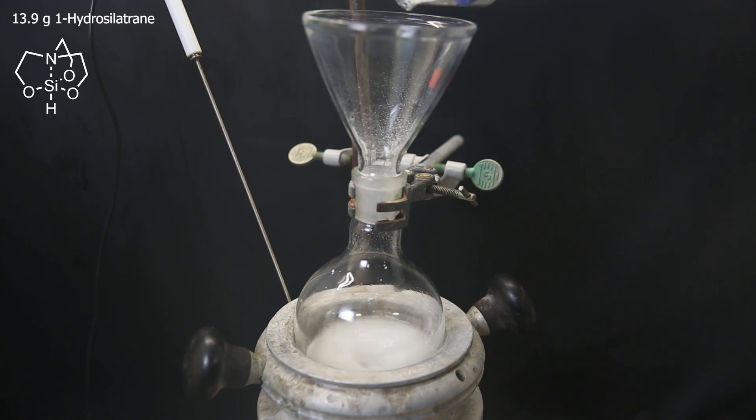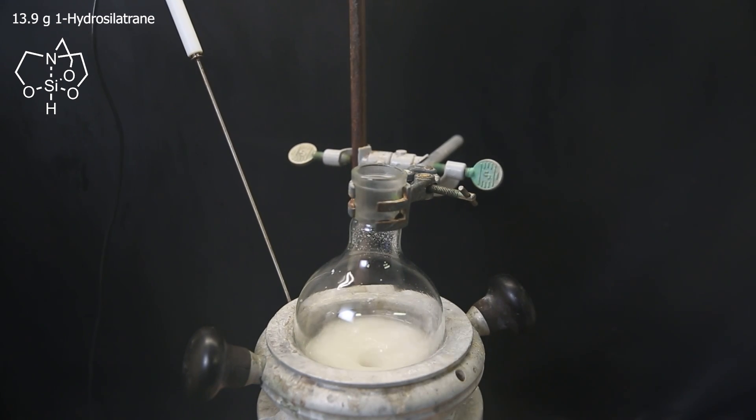Now for this reaction, I will try a new reagent called hydrosilatrane that I made in my last video. And I want to see if it works well as a replacement for sodium cyanoborohydride, which is normally used for this reductive amination as well as many others. And then leave it to stir for 3 hours at 25°C.